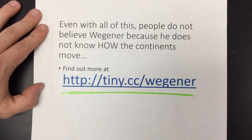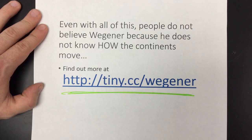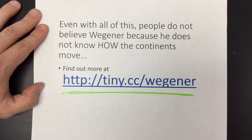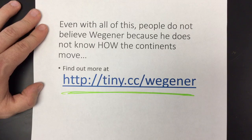Wegener has three big pieces of evidence that the continents have moved over time. He has fossil evidence — same fossils on different continents. He has glacial evidence — glacial scratches formed in the same direction on two different continents, meaning those continents must have been together when those scratches formed. And he has mountain belt evidence — matching mountain belts in different places in the world because those continents were shoved together. That's all for now. Thanks a lot.